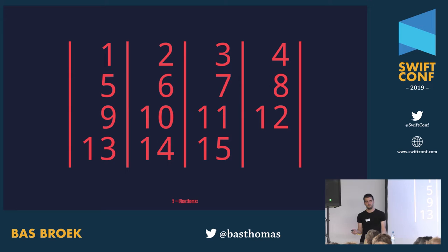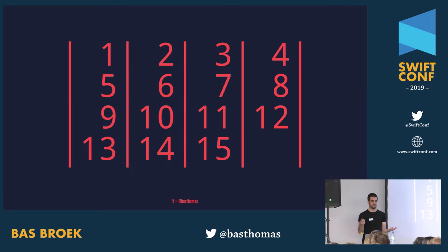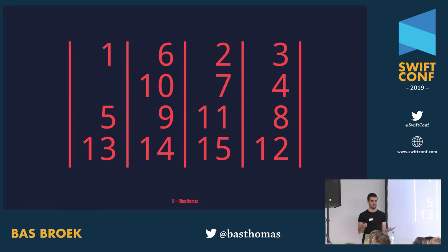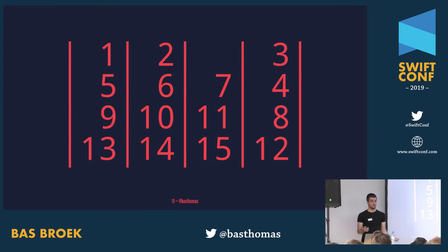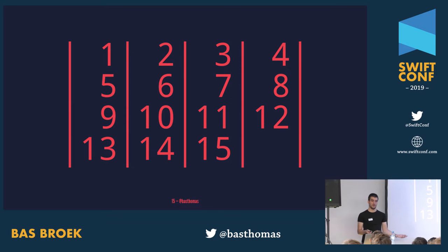So, this is the 15 puzzle — but not really, because like this it's already solved, so it's not really a puzzle. Why don't we shift it? And while we're at it, why don't we solve it? We move 5 up, 9 to the left, 10 down, 6 down, 2 left, 3 left, 4 up, 8 up, and 12 up. And we're back where we started.